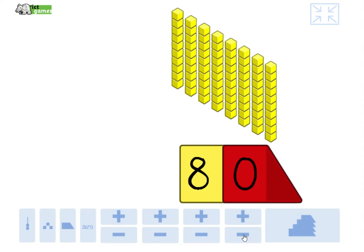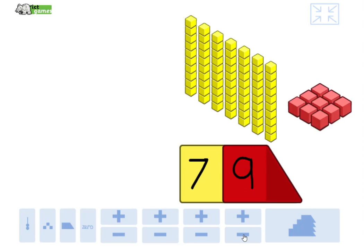Now, what's one less than 80? Turn to partner. 79, 78, 77, 76, 75. What's one less than 70? Well done. 69, 68, 67, 66.